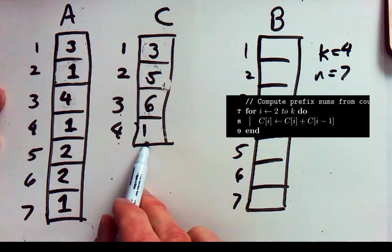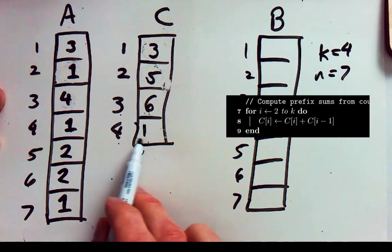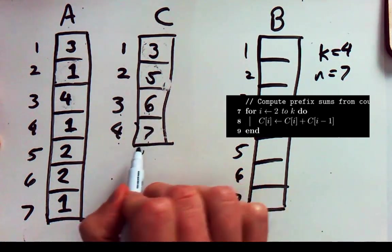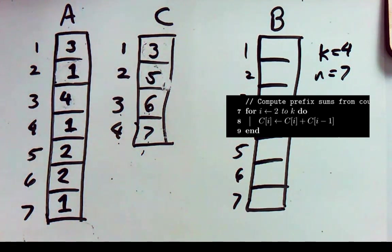Then the process repeats. When we get to 4 there are a total of 6 things that will come before our first 4. And there's a single 4. So our final 4 will end up being in box 7. So that takes us through the third phase of our algorithm.